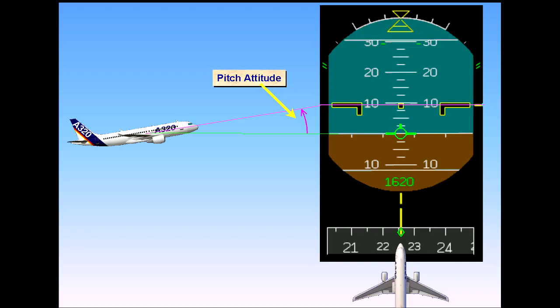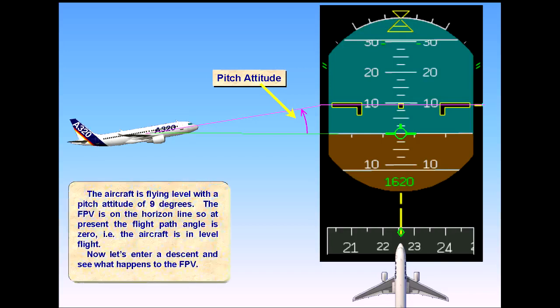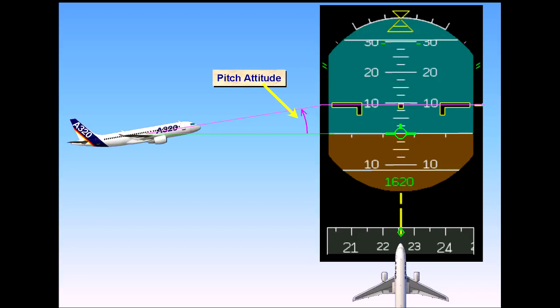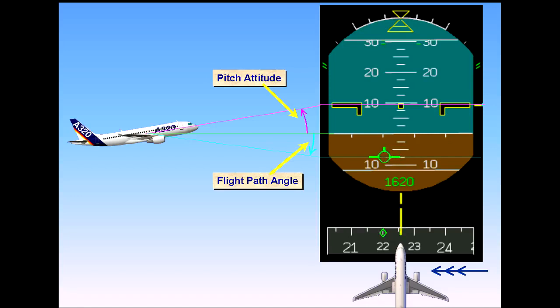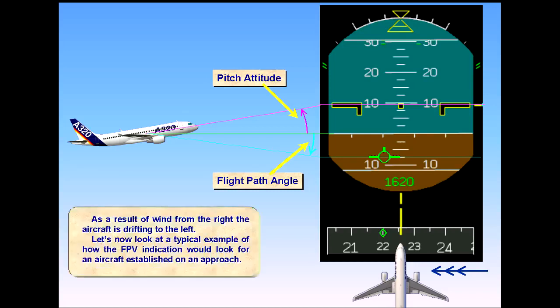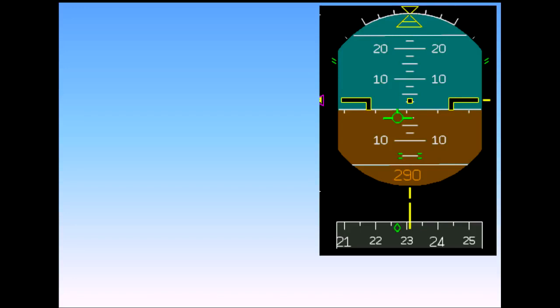Now let's enter a descent and see what happens to the flight path vector. The flight path vector will move down to indicate the angle at which the aircraft is descending through the air — this is known as the flight path angle. Now let's introduce some drift to the left. As a result of wind from the right, the aircraft is drifting to the left. In a typical example of an aircraft established on an approach, the aircraft is fully established on an ILS approach. Notice that the flight path vector is in line with the track diamond, indicating left drift. The FPV is below the horizon line in a 3-degree descent angle.